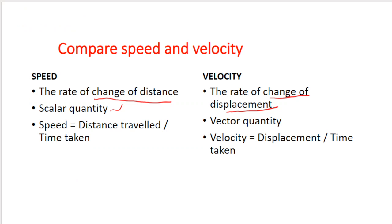Let us see the difference between speed and velocity. Speed is the rate of change of distance; velocity is the rate of change of displacement. Speed is a scalar quantity — represented by magnitude only. Velocity is a vector quantity — represented by both magnitude and direction. Mathematically, speed = distance/time and velocity = displacement/time.